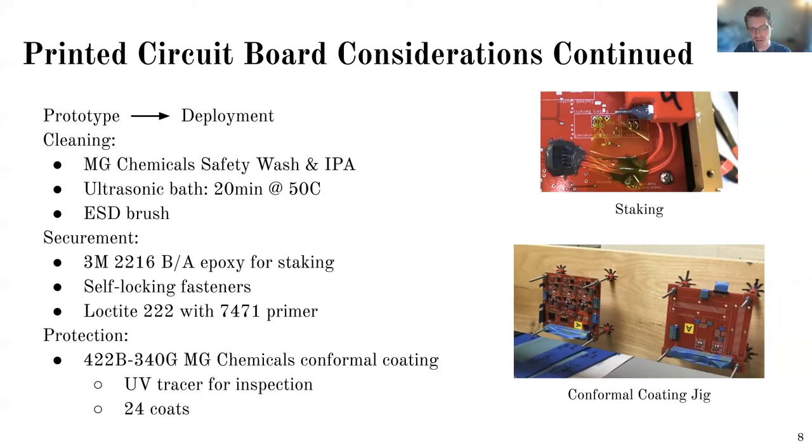We also use self-locking fasteners. So because this was going into space, we couldn't use like nylon insert ones, but we use like the biting teeth kind, or like the deformed threads and then Loctite we used for certain screws. So that was especially helpful for if you were bolting down something squishy, like an FR4 board and then conformal coating was used to actually protect the boards. So there's different types. The MG chemical products are nice because they just come in a can. So we just used a silicon based one.